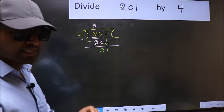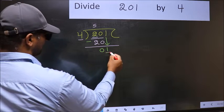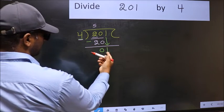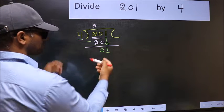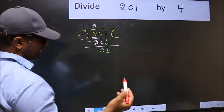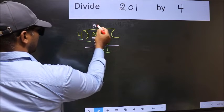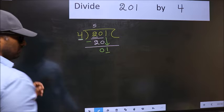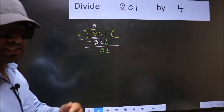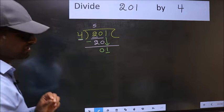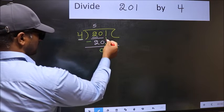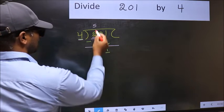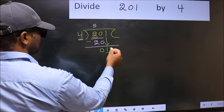Here we have 1 and here 4. 1 is smaller than 4. So what many do is they directly put a dot and take zero, which is wrong. Why is it wrong? Because just now you brought this number down, and in the same step you want to put a dot and take zero.